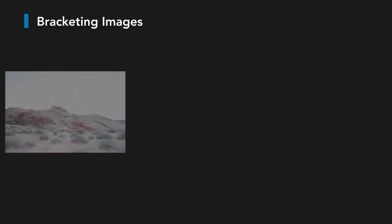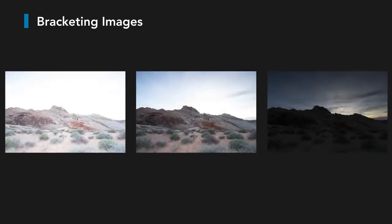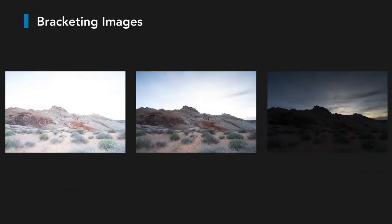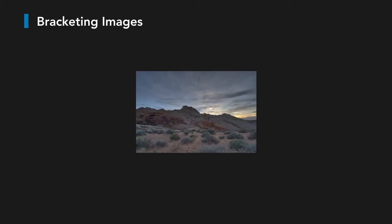If you talk to an experienced photographer, you may hear them use the word brackets. What happens here is a photographer will often take several photos of the same scene with slightly different camera settings. This was done in the old days just for safety, to make sure that as you shot a scene, you didn't perhaps miss some of the key details. But over time, as software tools evolved, people started realizing that they can combine these multiple exposures together to get the perfect image.